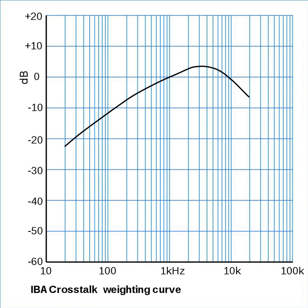The Independent Broadcasting Authority published a weighting curve for use in crosstalk measurement that gives due emphasis to the subjective audibility of different frequencies. In the absence of any international standards, this is still in use despite the demise of the IBA. Good crosstalk performance for a stereo system is not difficult to achieve in today's digital audio systems, though it was hard to keep below the desired figure of minus 30 decibels or so on vinyl recordings and FM radio.